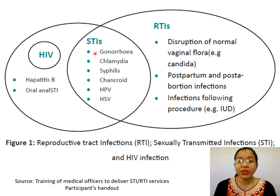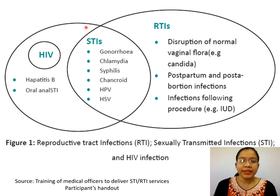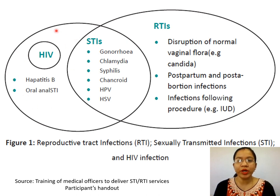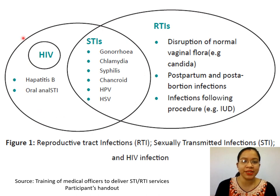Sexually transmitted infections that are also reproductive tract infections include gonorrhea, chlamydia, syphilis, chancroid, human papillomavirus infections causing warts, and herpes simplex virus. In this circle, you can also see that not all sexually transmitted infections are reproductive tract infections—for example, HIV is not particularly a reproductive tract infection. Similarly, hepatitis B and oral STIs are not reproductive tract infections.